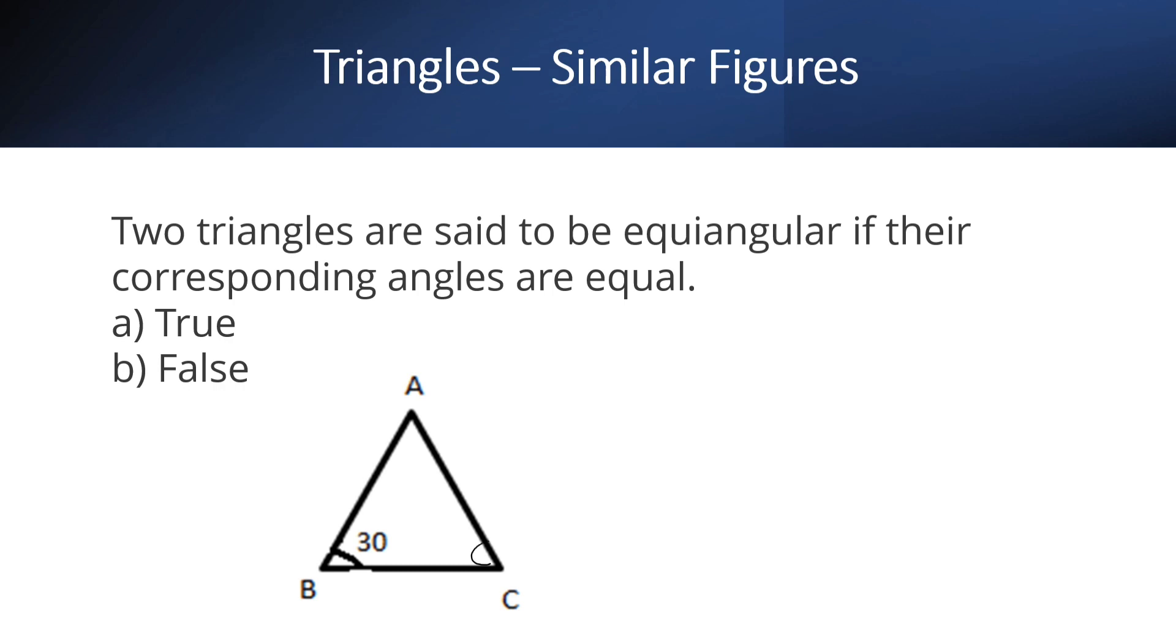Let angle C be 50. And in this triangle, angle Q is 30, angle R is 50. The remaining should be equal. Angle A should be equal to angle P.